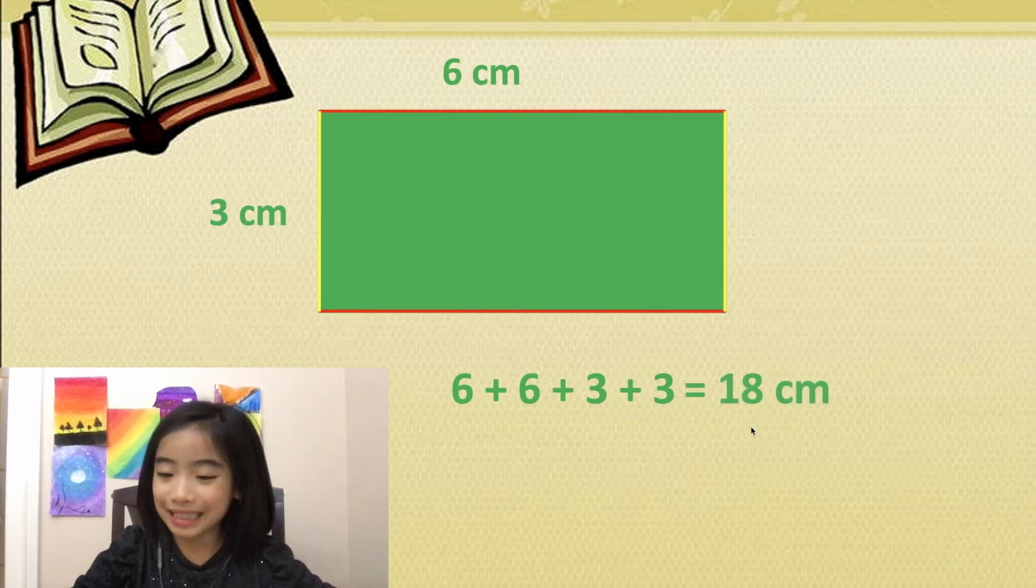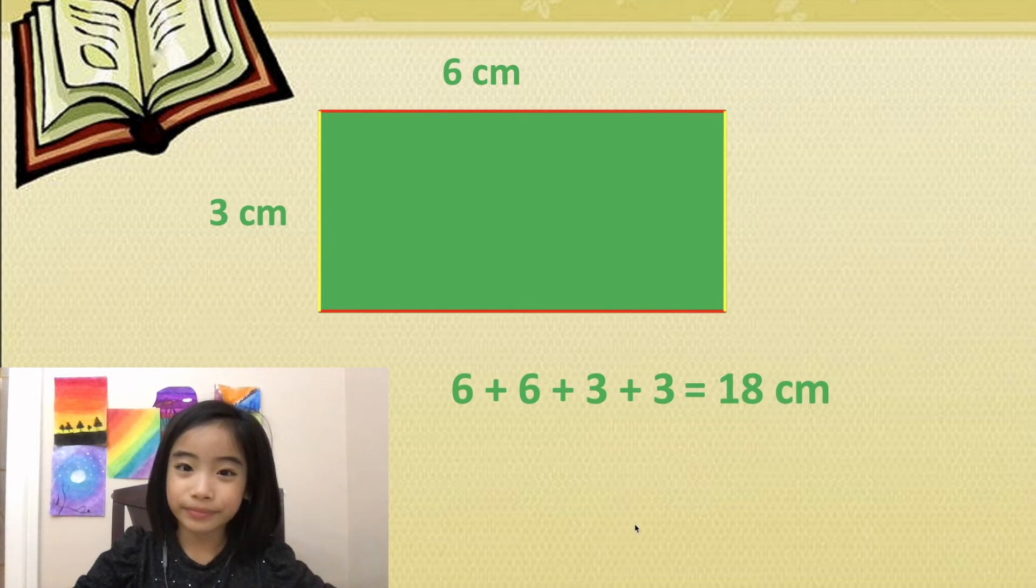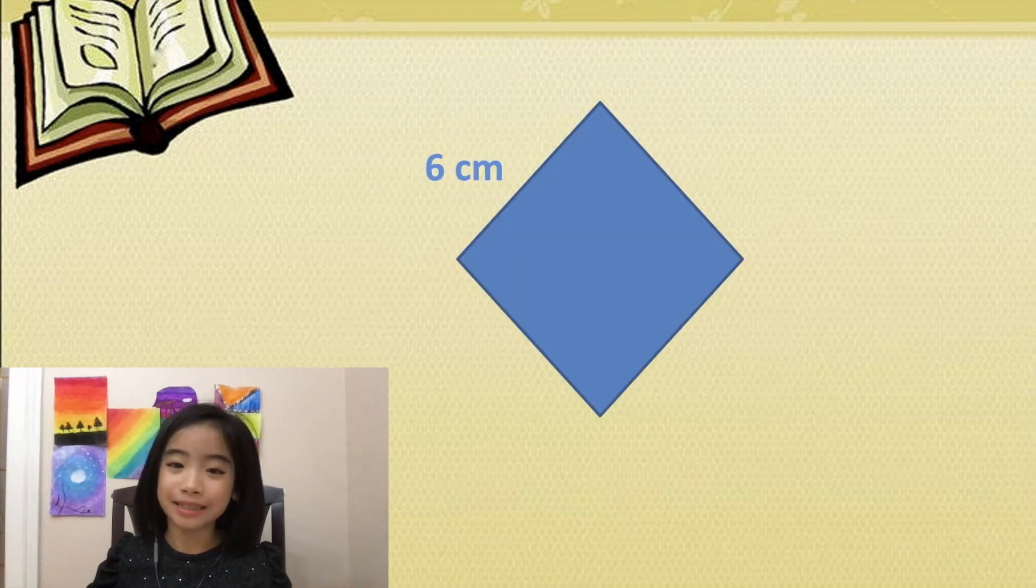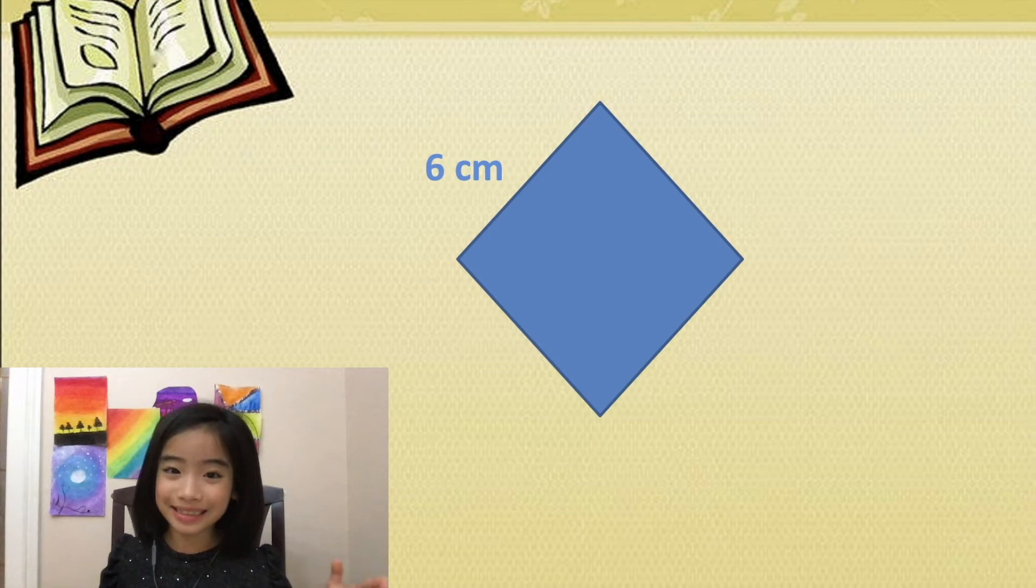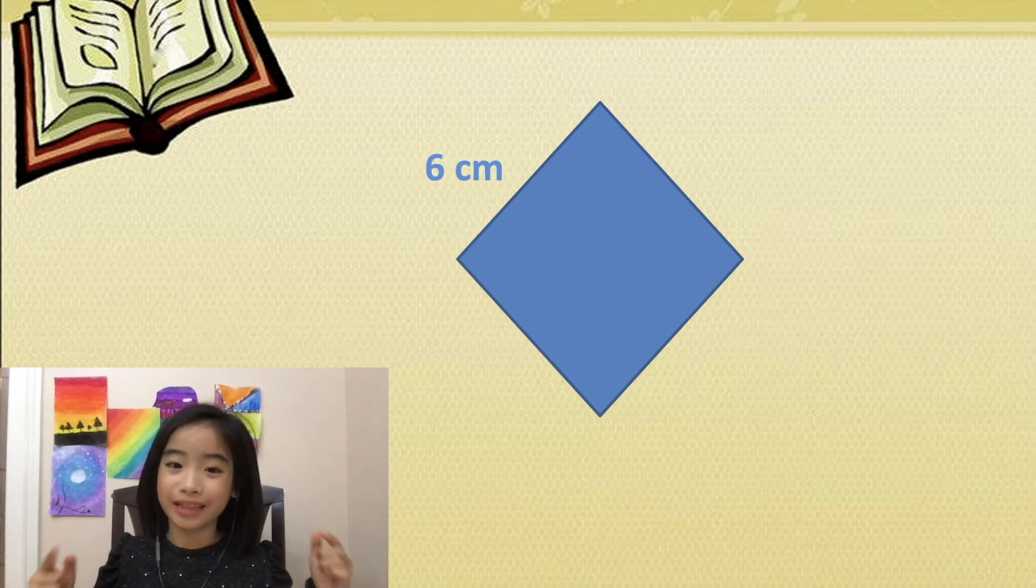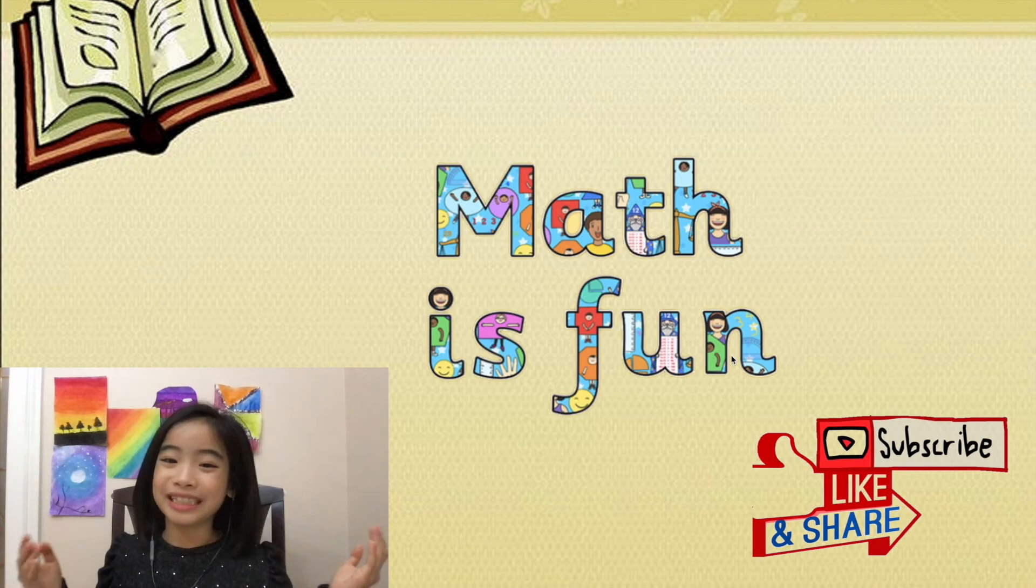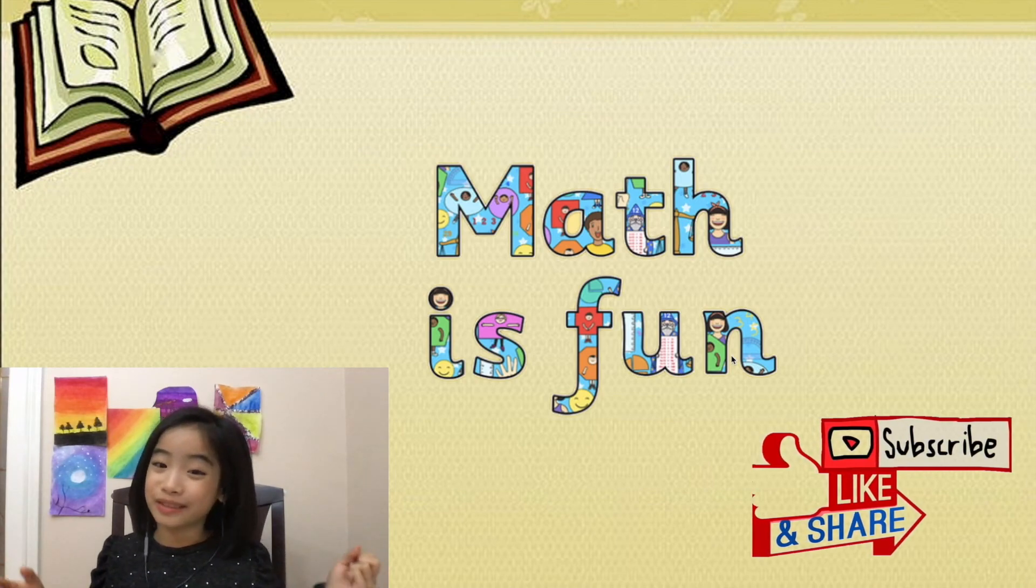This is a blue rhombus. One side is six centimeters. I'll leave it for you to figure out the perimeter of this blue rhombus. That's all for today. I thought this was fun, did you have fun?